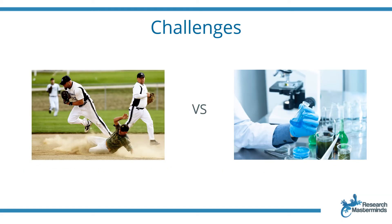Now, although the H-index is a better metric than the total number of papers published, there are challenges when it comes to using it to measure impact. The H-index is good for comparing scholars working in the same field, but it is important to note that the H-index differs across fields, influenced by the average number of references in a paper in that field, and the average number of papers produced by each scientist.